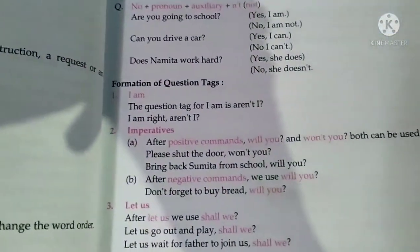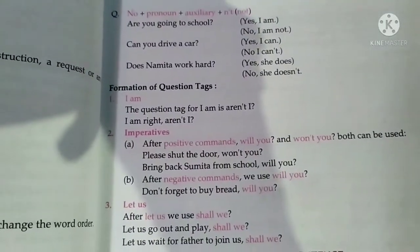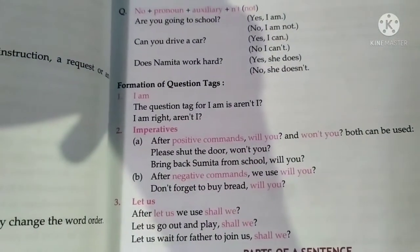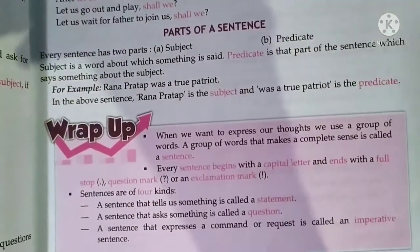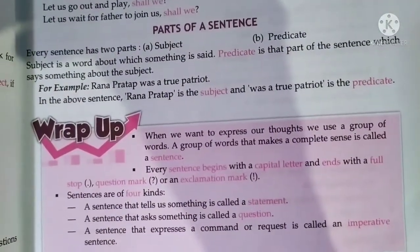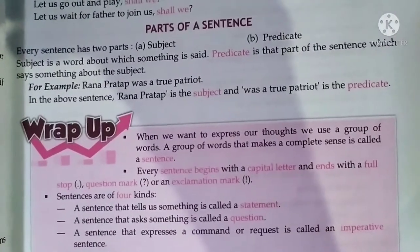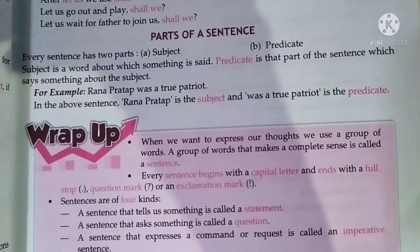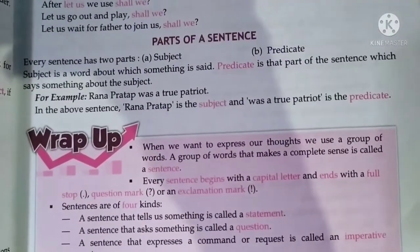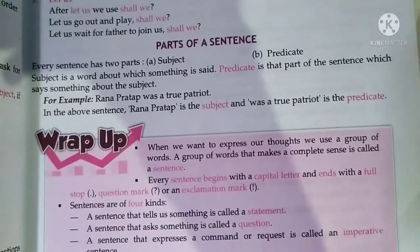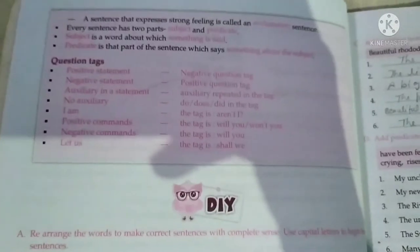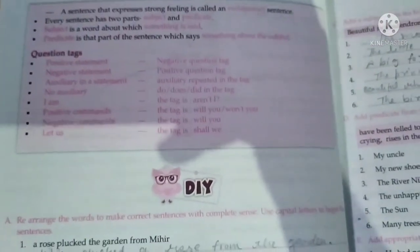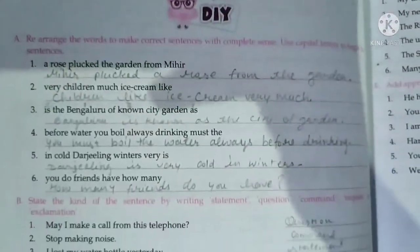Read the notes part also — it's important for you. Formation of question tags: what is that? Also, parts of a sentence: there are two parts — subject and predicate. Read the definitions given here, and also read what the subject and predicate are. These things you can read; they are given in your book. Exercises you can see also.